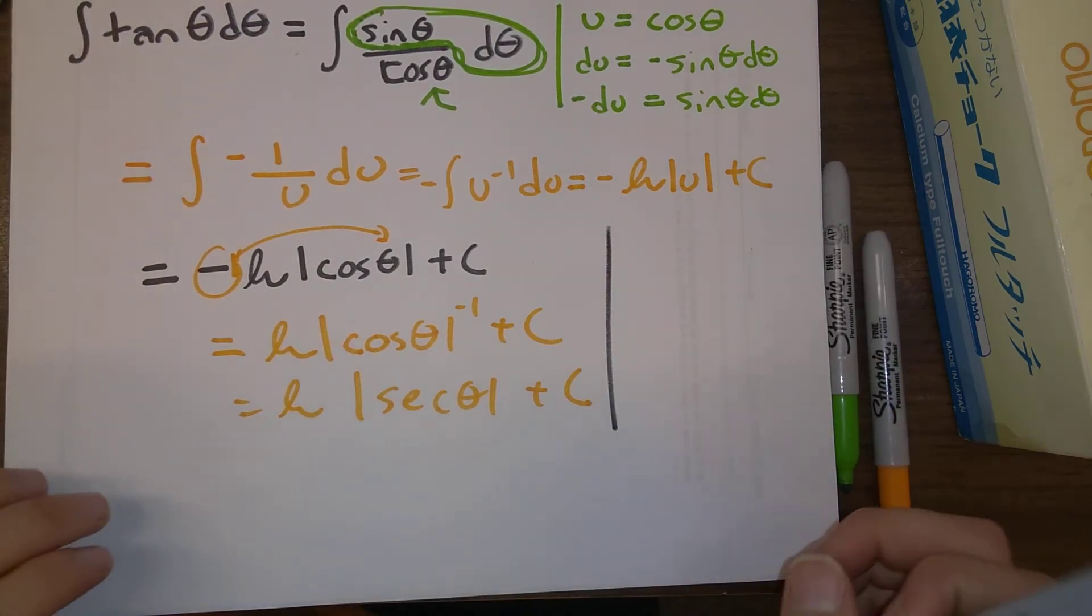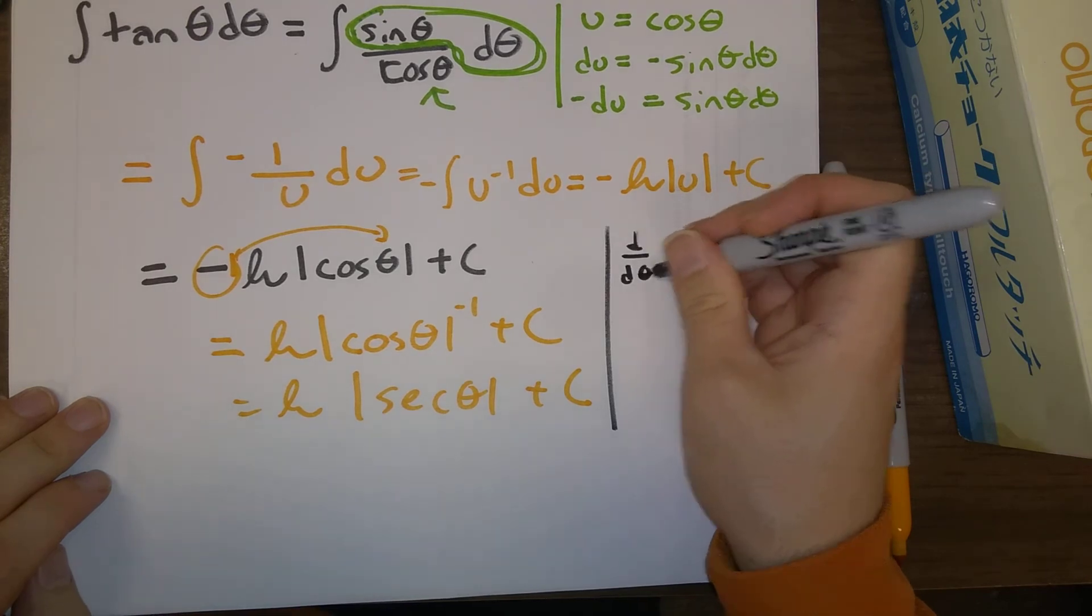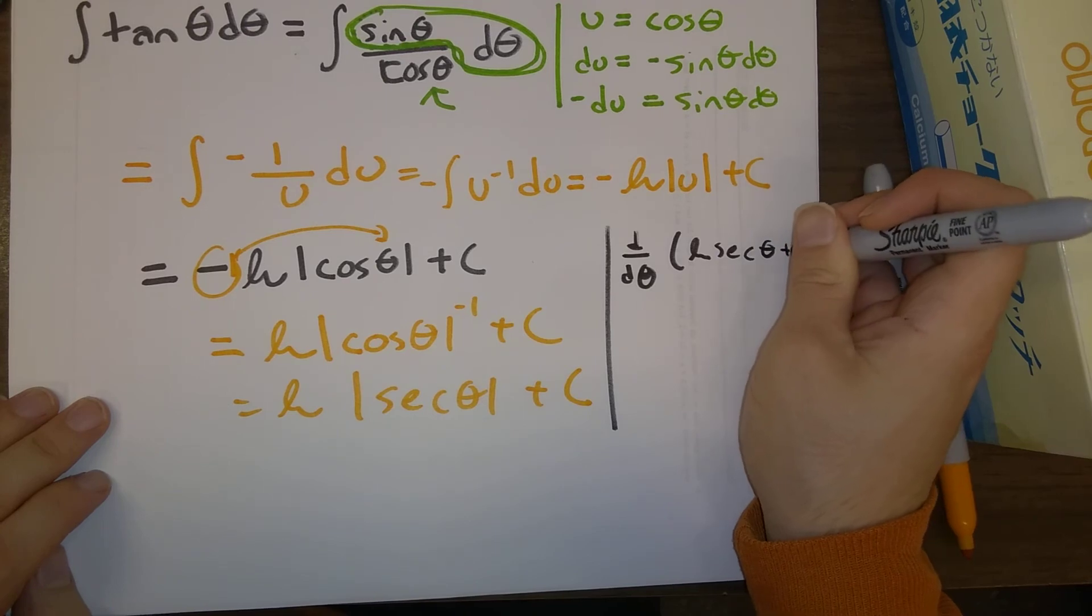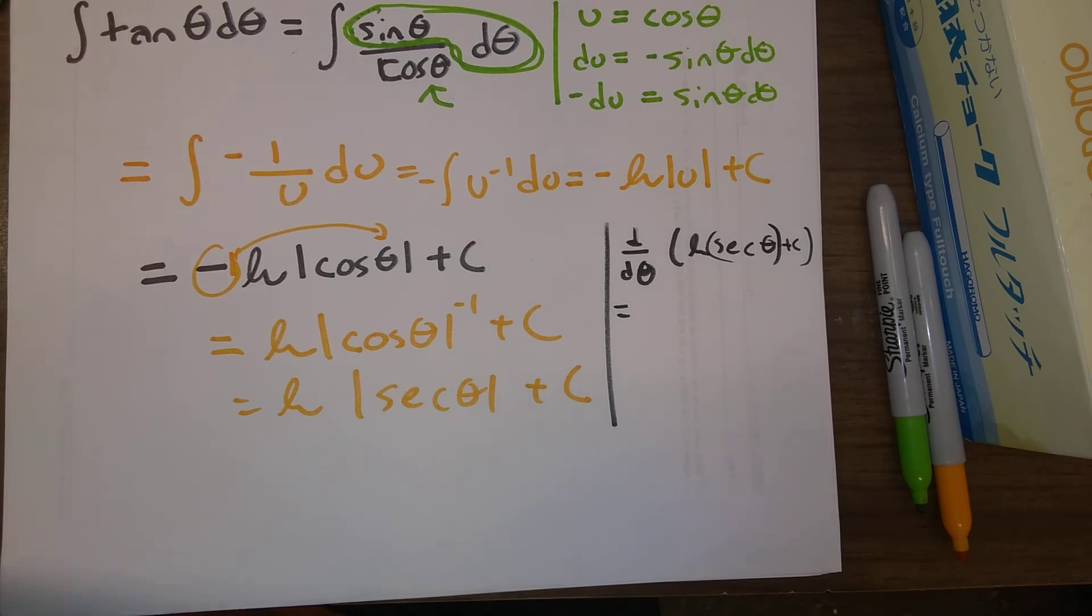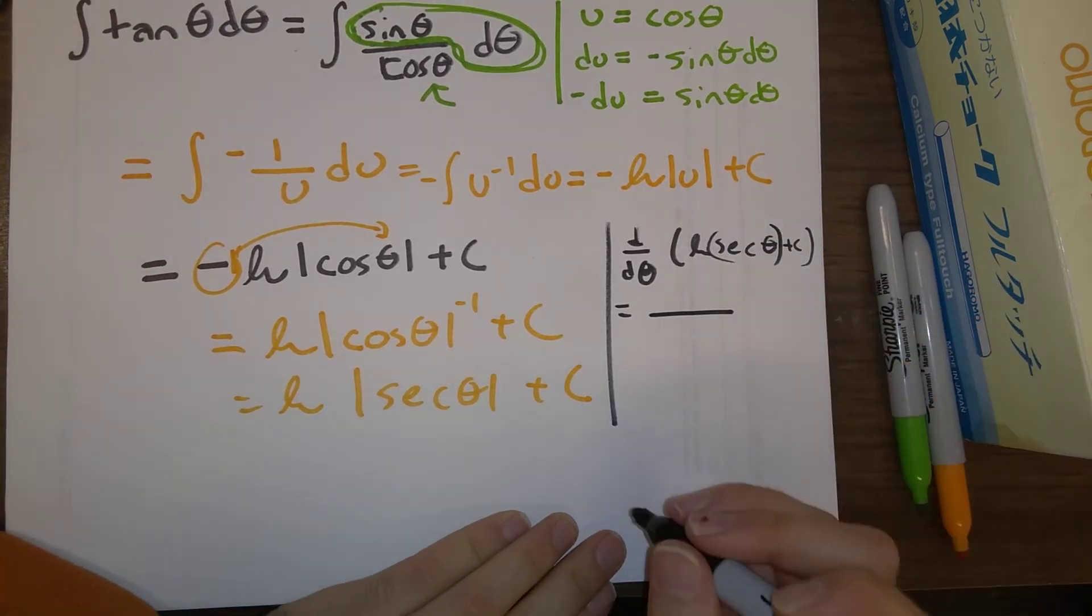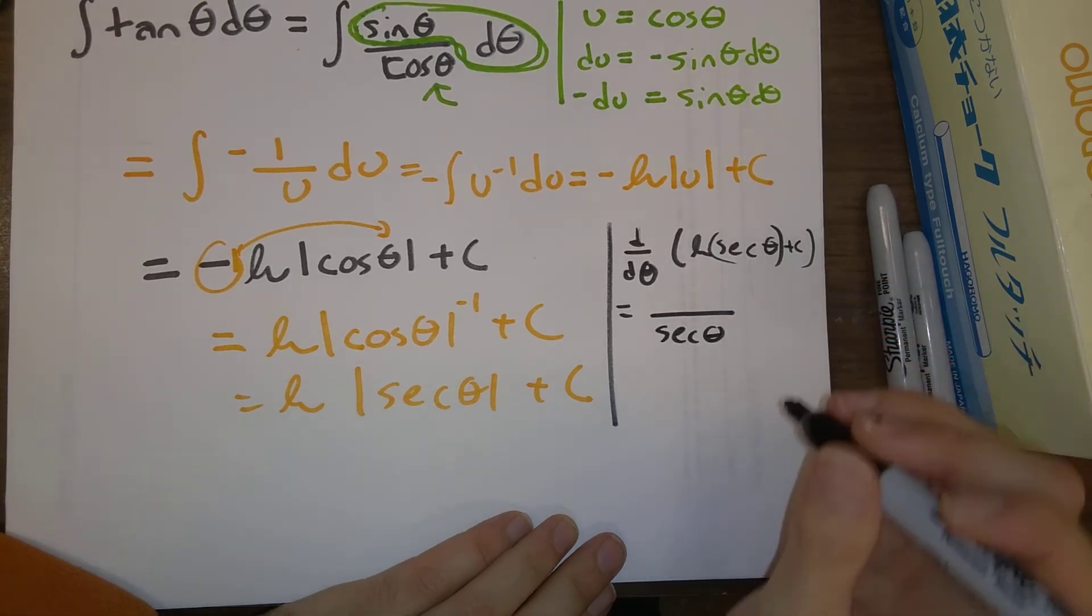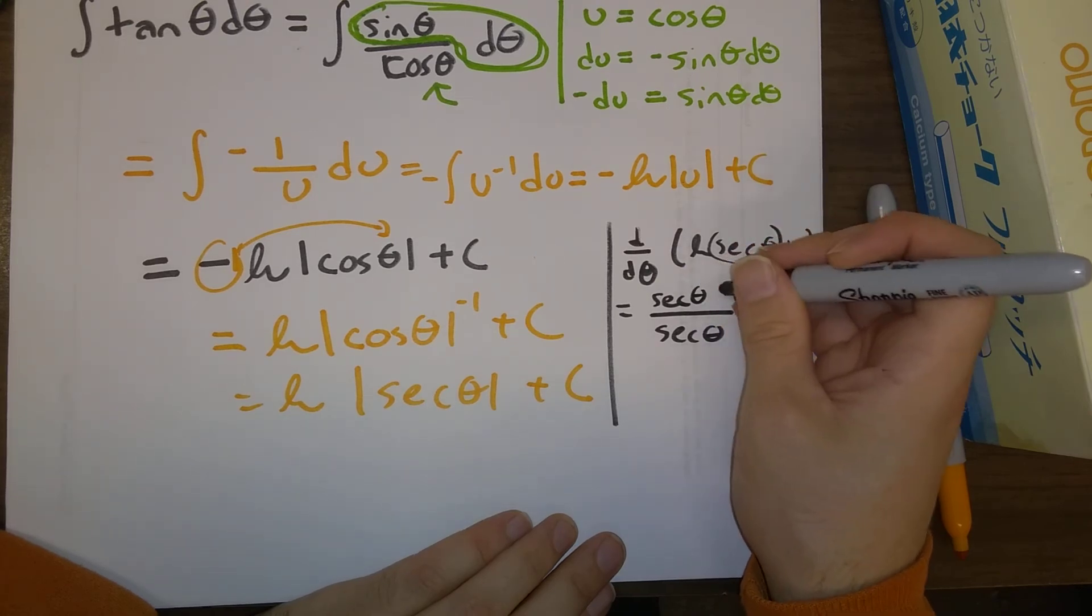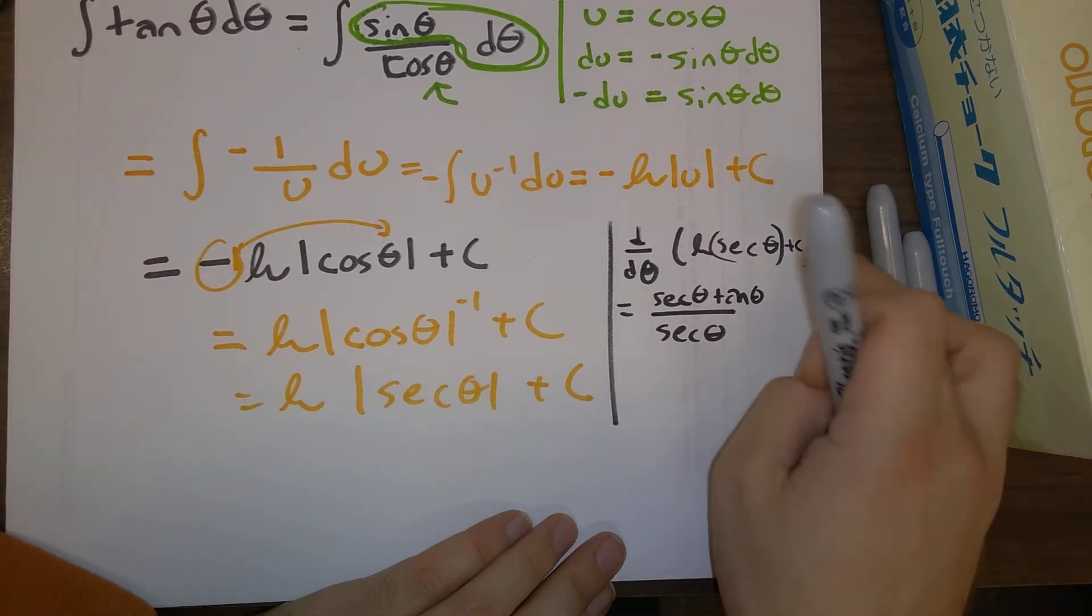In the interest of simplicity, I'm going to drop the absolute value here. But if we take the derivative with respect to theta of natural log of secant theta, plus c. So, that's going to be, so, the derivative of natural log of secant theta. So, divide by secant theta, and multiply upstairs by, upstairs goes the derivative of secant theta, which is secant theta, tangent theta, plus c.